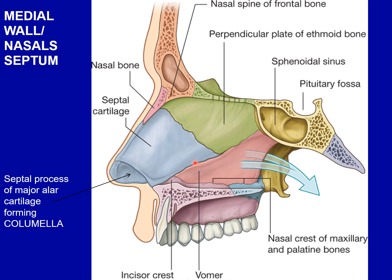The cartilaginous septum is also aided by the septal process of the two major alar cartilages. The septal processes of the two major alar cartilages are united together in the midline by fibrous tissue to form the columella. Between the columella and the caudal border of the nasal septum, a small part of the septum is made up of a double layer of skin with no bony or cartilaginous support, and this part is referred to as the membranous septum.